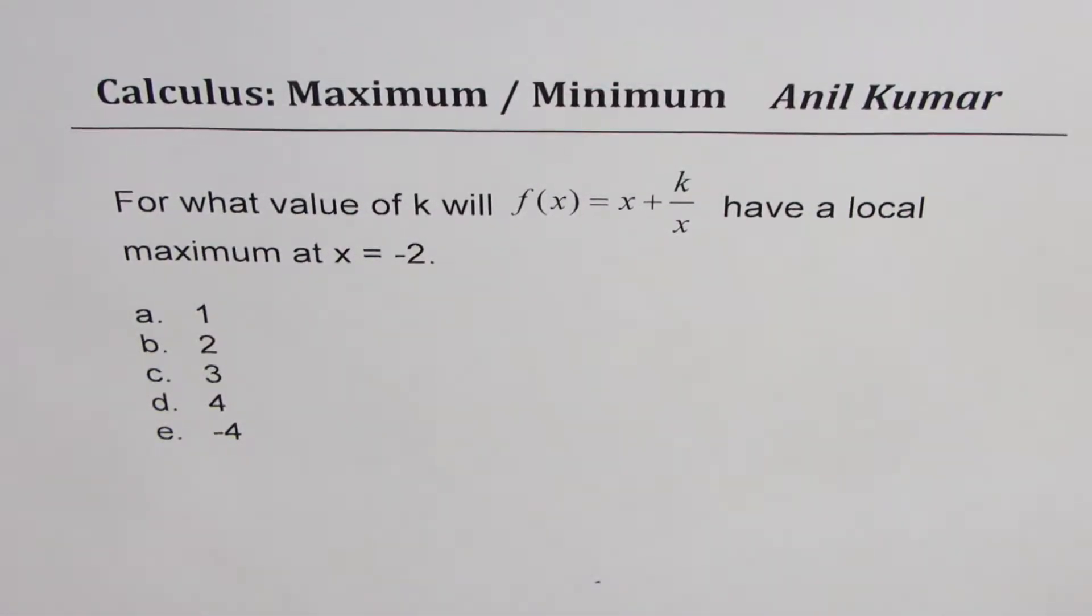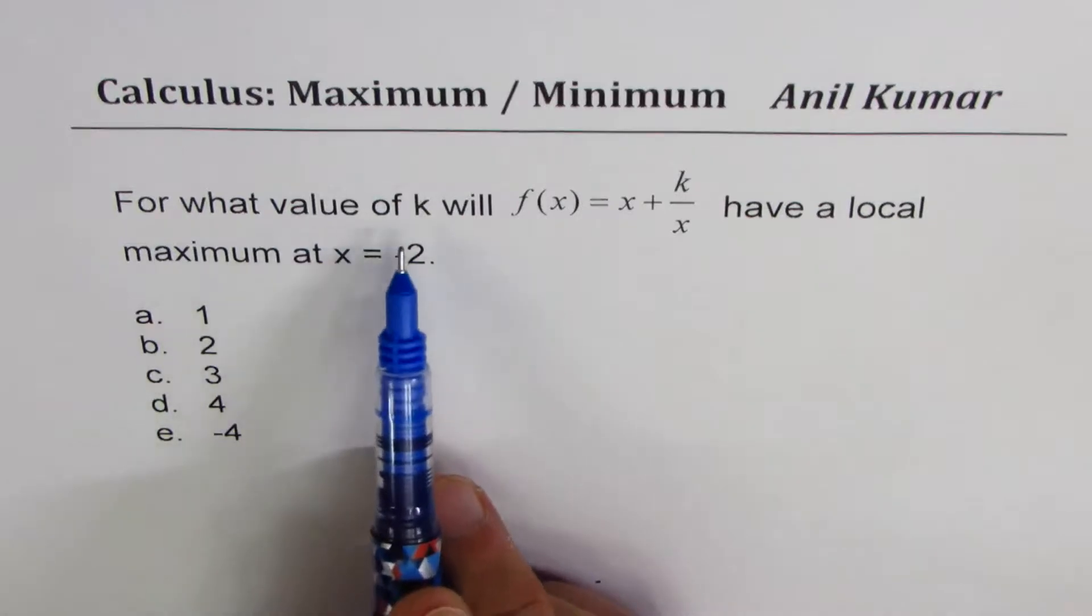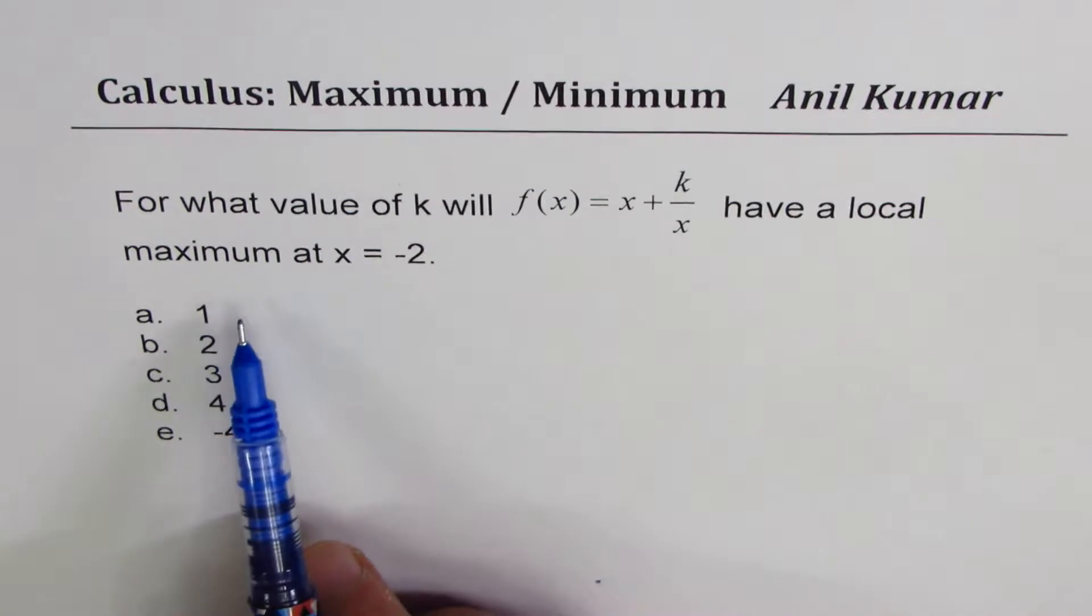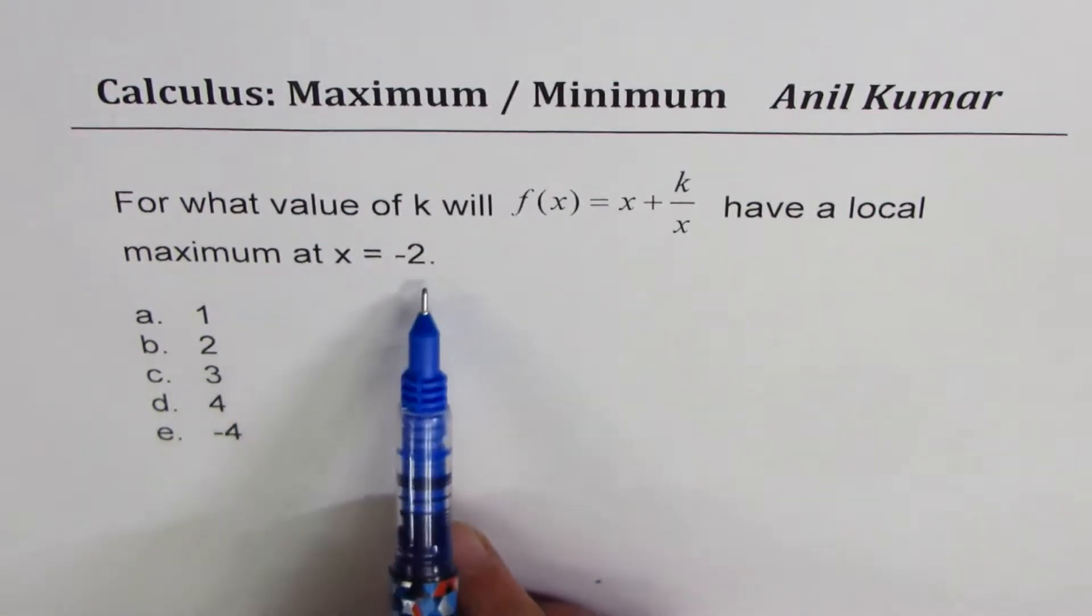Anil Kumar sharing with you a multiple choice test question on maximum and minimum. The question here is: for what value of k will f(x) = x + k/x have a local maximum at x = -2?